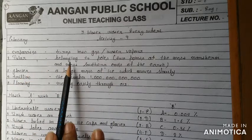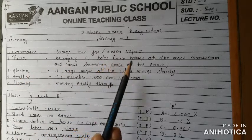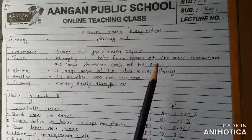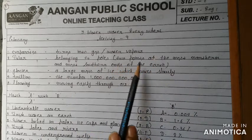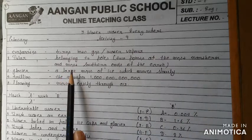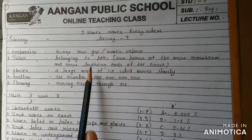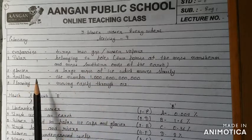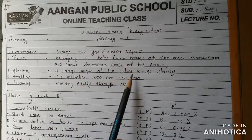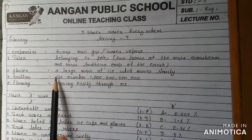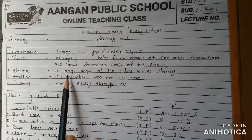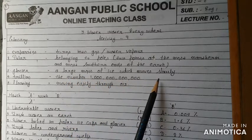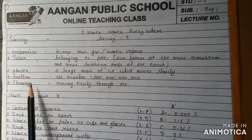'Polar' means belonging to the poles - the two most northern and most southern points of the Earth. These are the polar regions where water is locked. 'Glacier' means a large mass of ice which moves slowly - big rocky glaciers that slowly move.